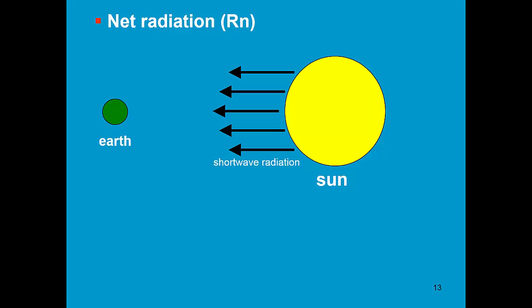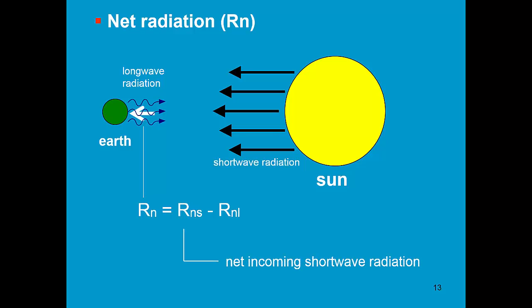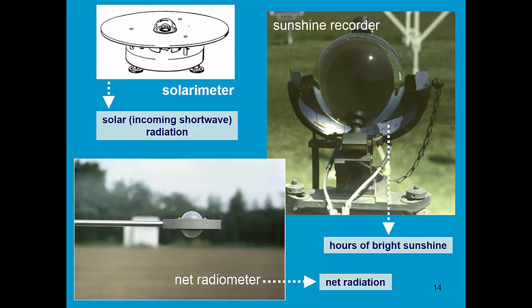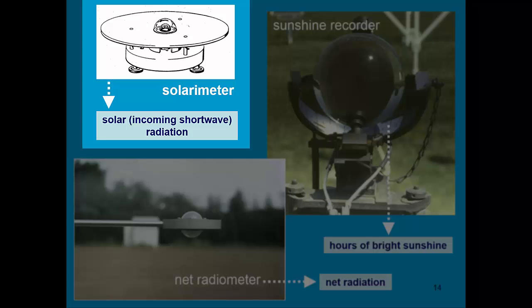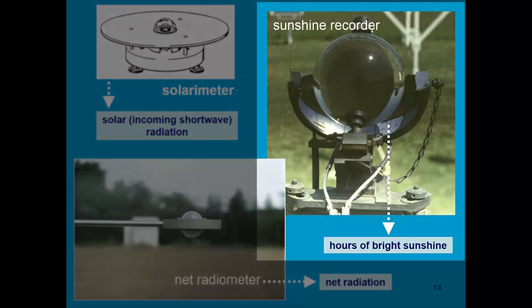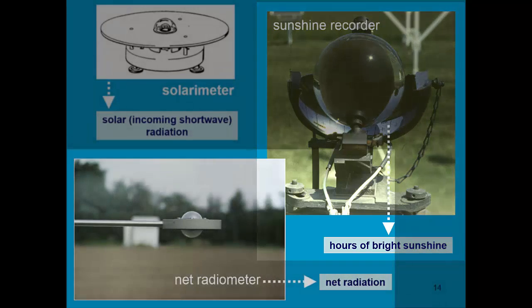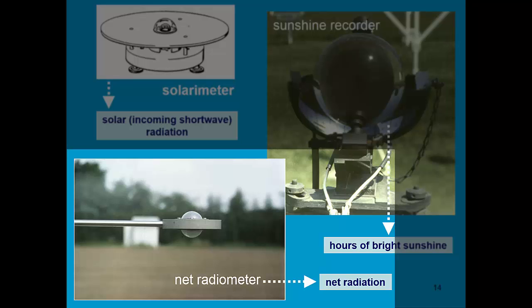Net radiation. The sun emits shortwave radiation because it is at high temperature. That energy heats up the earth, and as a consequence the earth also starts to emit radiation — longwave radiation, because the temperature of the earth is much lower than that of the sun. Net radiation is the difference between the net incoming shortwave radiation and the net outgoing longwave radiation. Radiation can be measured with a solarimeter for incoming shortwave radiation, with sunshine recorders to measure hours of bright sunshine (using the Angstrom formula to calculate solar radiation), or with a net radiometer to measure net radiation directly.